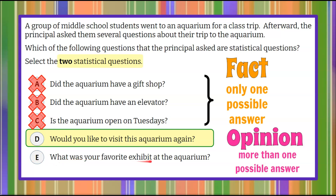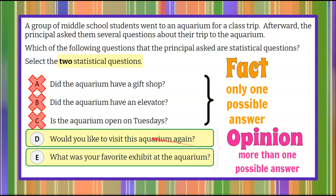E: What was your favorite exhibit at the aquarium? Again, opinion — more than one possible answer. Anybody could pick the same exhibit, or they could all pick a different one. So our answer choices are D and E because these are opinion and a variety of answers are possible. Whereas A, B, and C are fact — the aquarium either did or did not have a gift shop, an elevator, or was open on Tuesday.